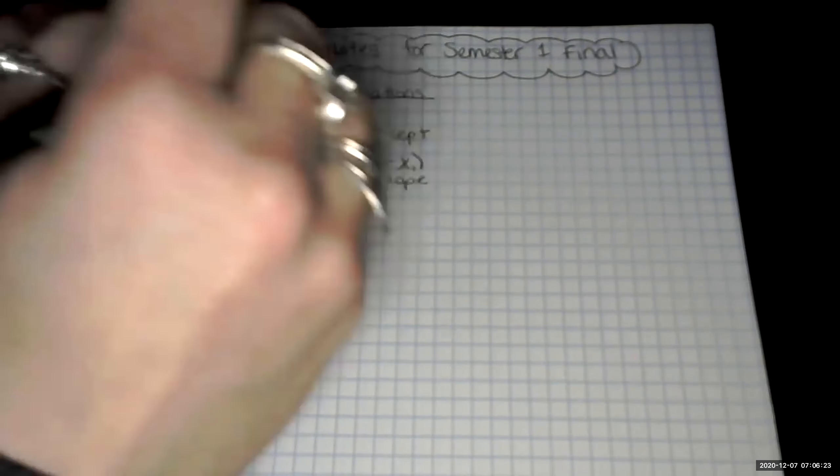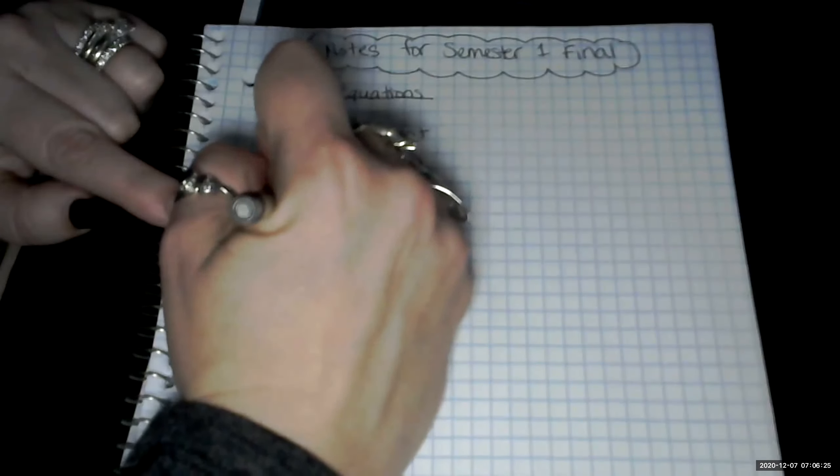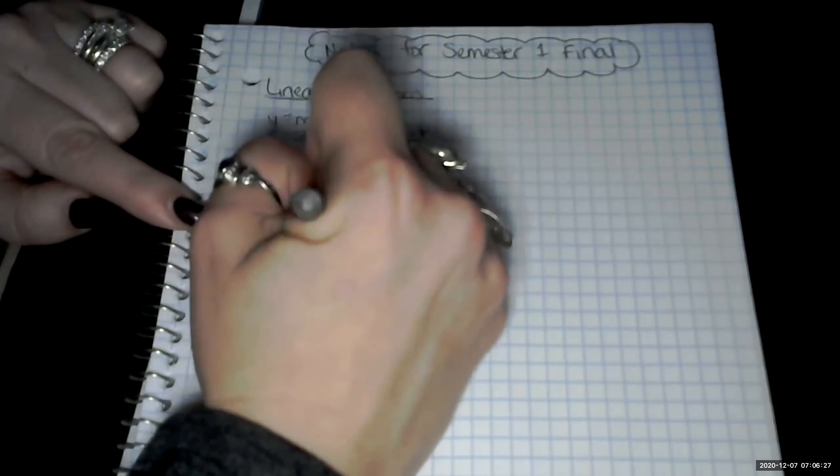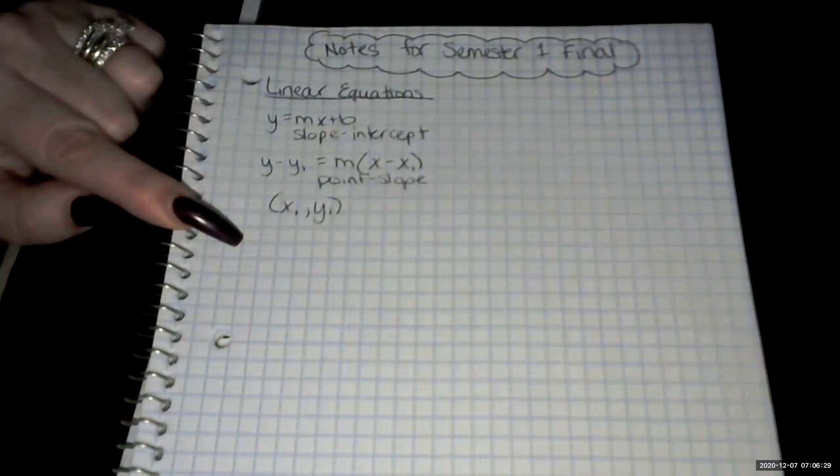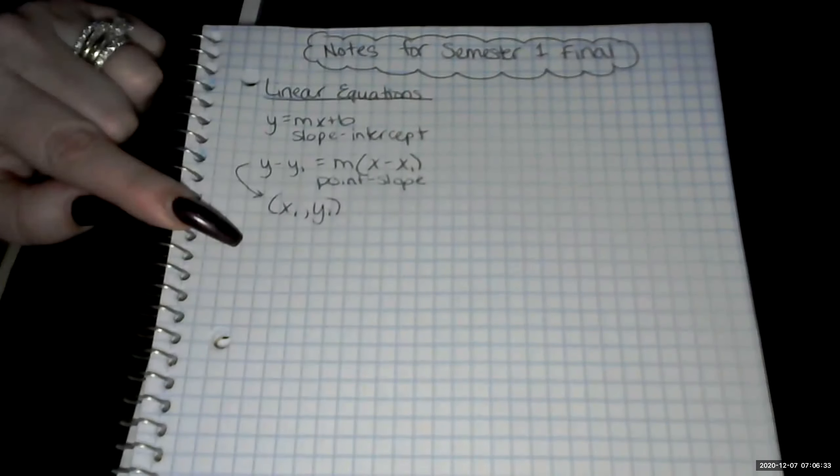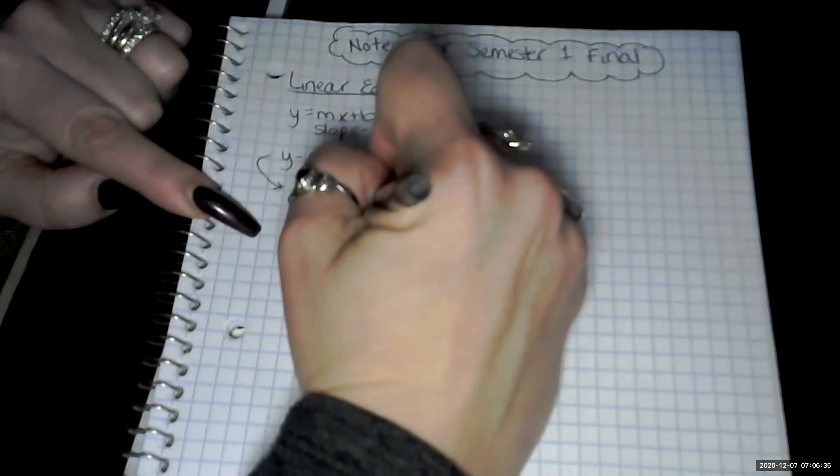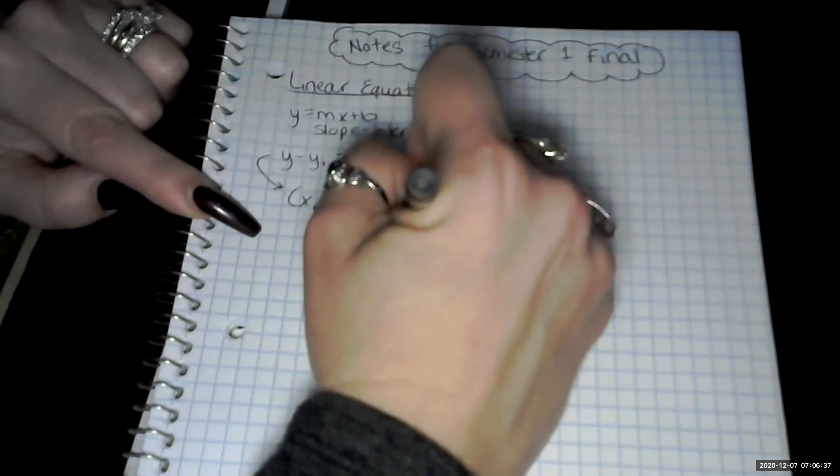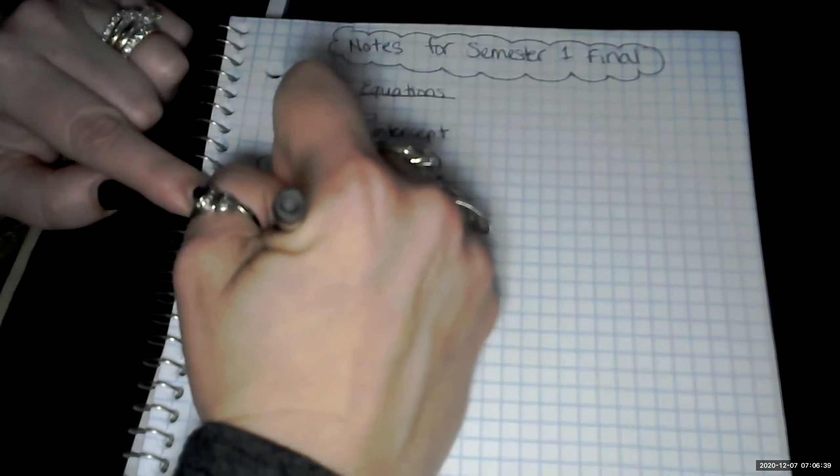We should also just point out that x1 comma y1, I'm going to do a little arrow, is a point on the line.